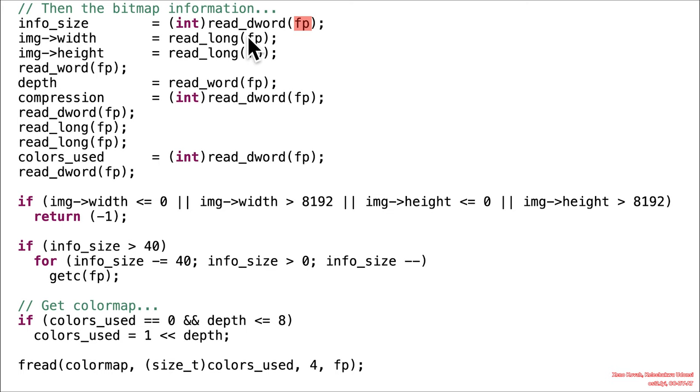Then if we go ahead and move down a bit into the consequential code, we can see that fp is reading in a dword or a 32-bit value here, and that catches info size on fire. Read along into width, read along into height, throw away the next word worth of data, read a word into depth, read a dword, 32-bits, into integer, signed integer, compression, skip, skip, skip, and read a dword into colors used, and then skip.